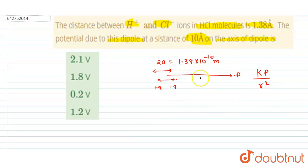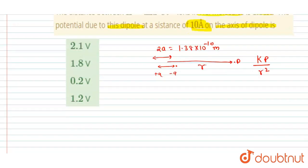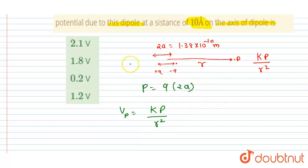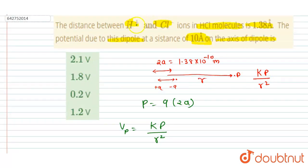The distance between the two charges is given in the question. We have to find the potential at distance r from the dipole. The potential at point P equals kp divided by r squared, where the dipole moment p equals q times 2a. Both particles carry a charge equal to that of one electron.